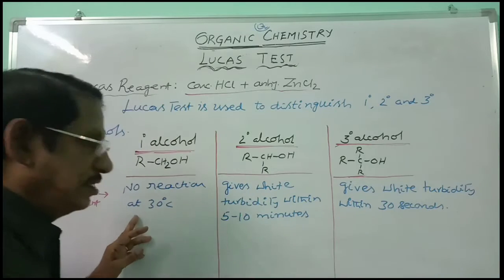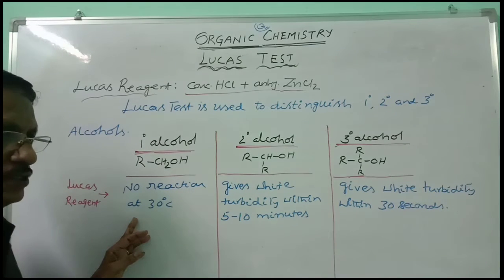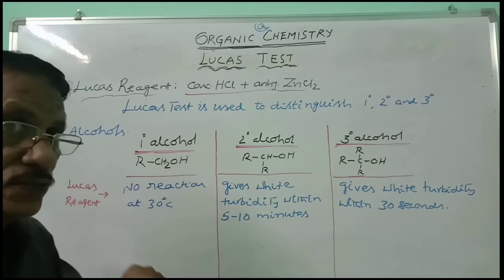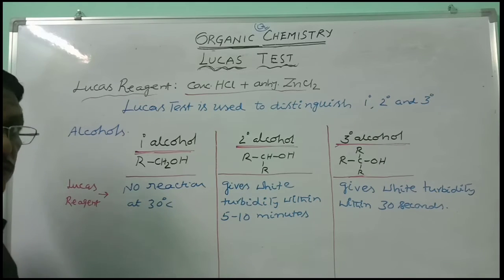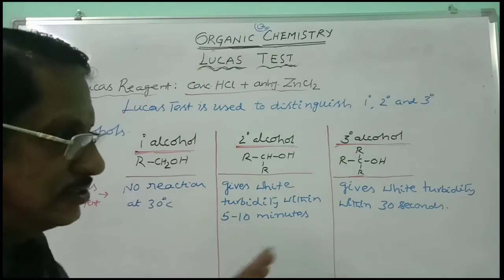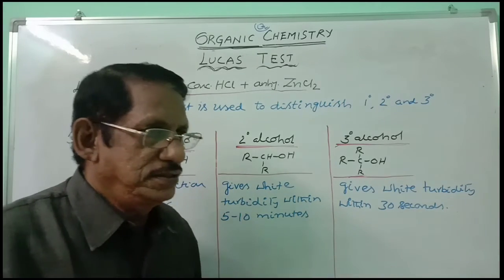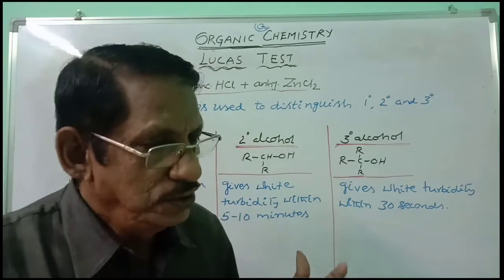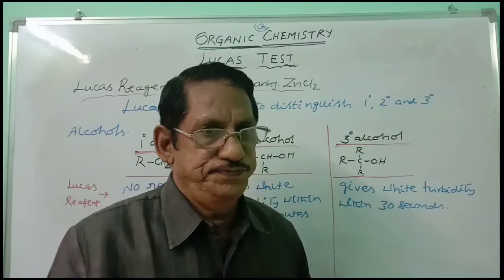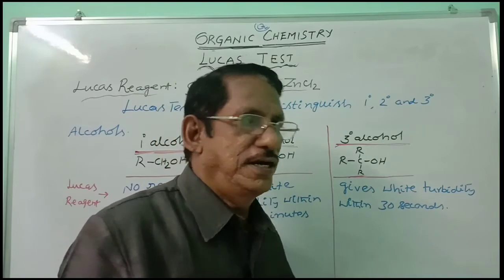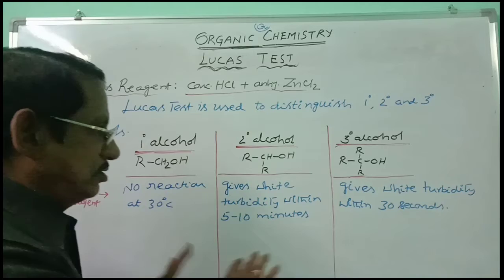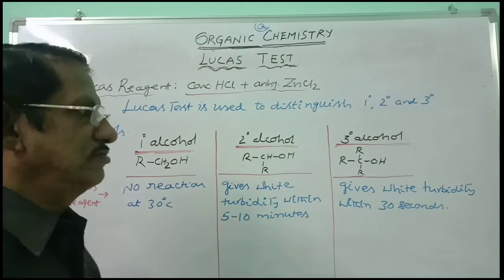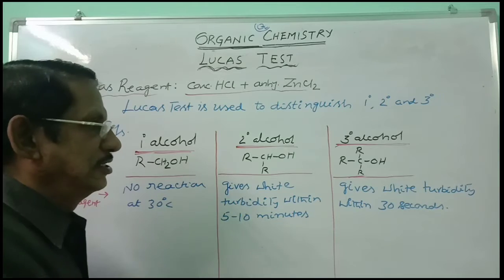And in the case of primary alcohol, no precipitate at all, because there is no reaction at room temperature. You have to note that the reaction is taken at room temperature. At room temperature, primary alcohol doesn't give any turbidity. Even though you keep that mixture for a long time, there is no reaction at all — and that is why there is no turbidity. This is how these three alcohols can be distinguished one from the other by using Lucas reagent.